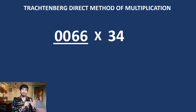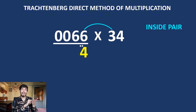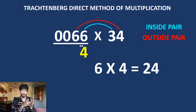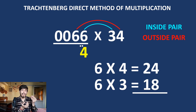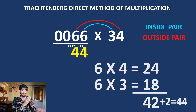Now an example where we need that extra zero: 66 times 34. Step one: 6 times 4 is 24 — write 4 and 2 dots. Inside pair and outside pair: 6 times 4 is 24, plus 6 times 3 is 18. Using left-to-right addition: 24 plus 10 is 34, and 34 plus 8 is 42. There is a 2 carry, so write 4 and 4 dots. We use our left-to-right addition method learned in the mental math series.